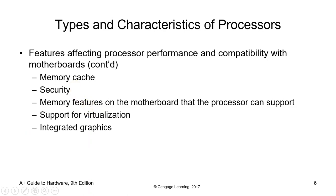Memory cache is a type of cache memory that is installed as part of the computer's main random access memory (RAM). It is a native cache memory of the RAM that provides faster data accessing and processing capabilities than the RAM itself.